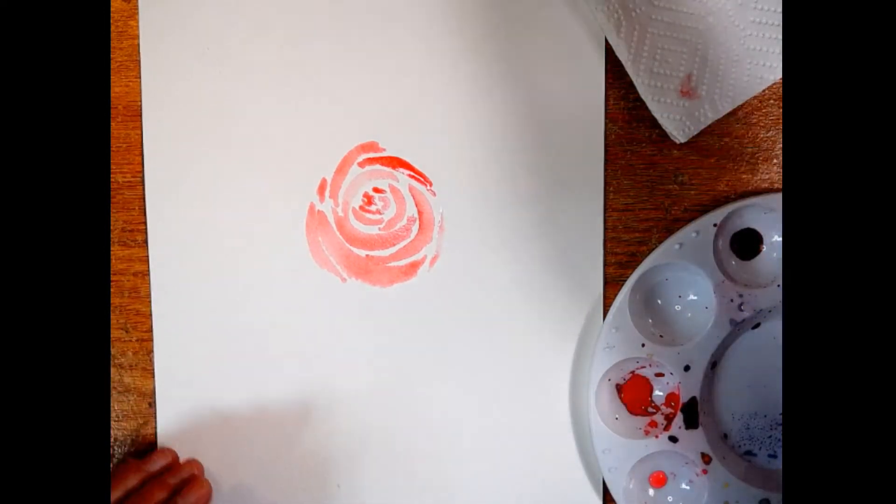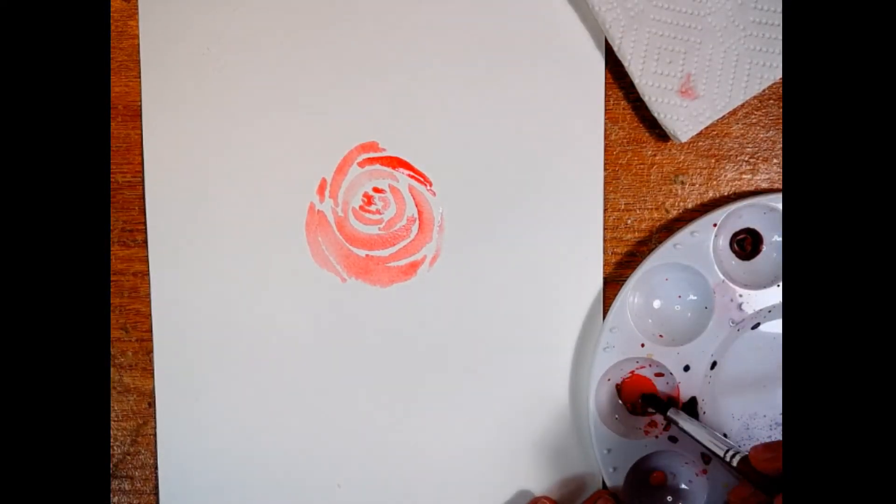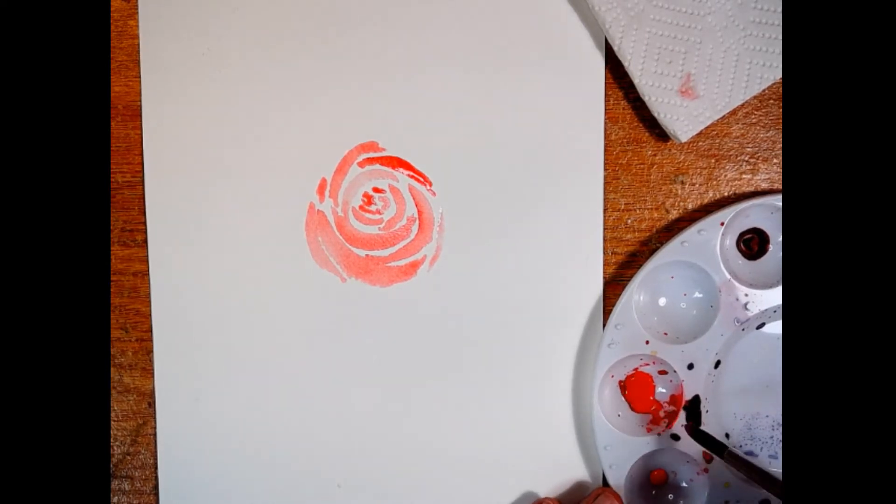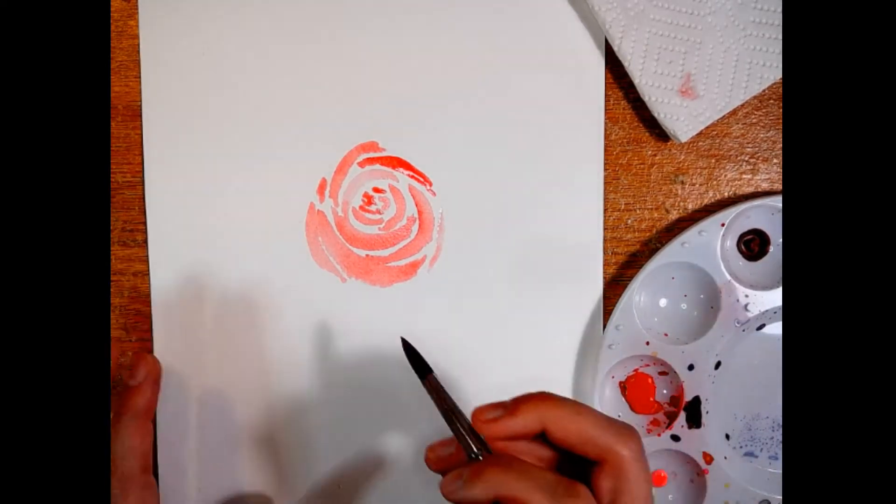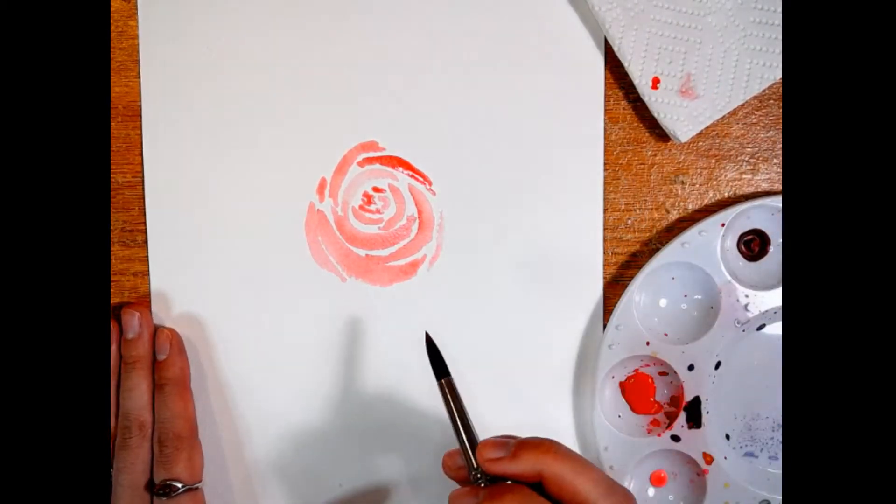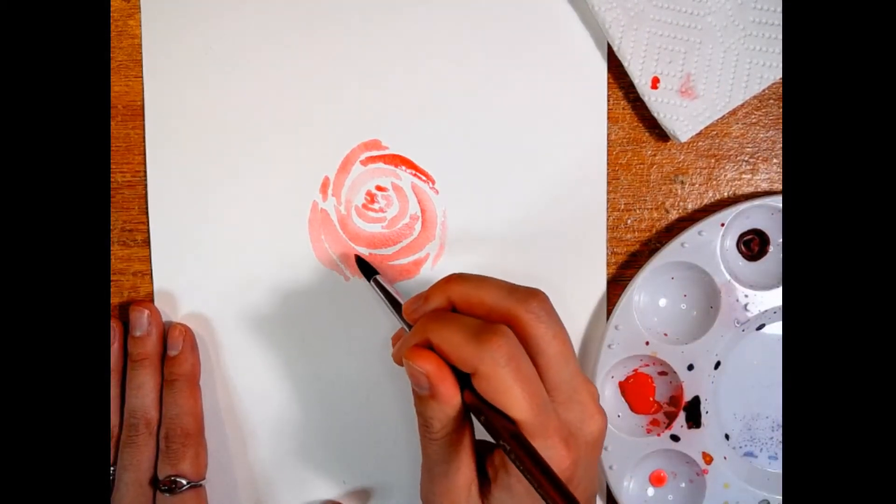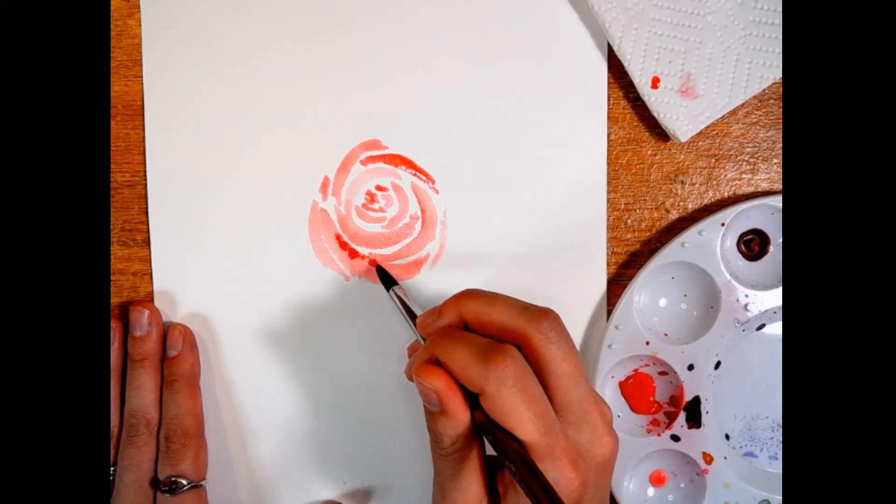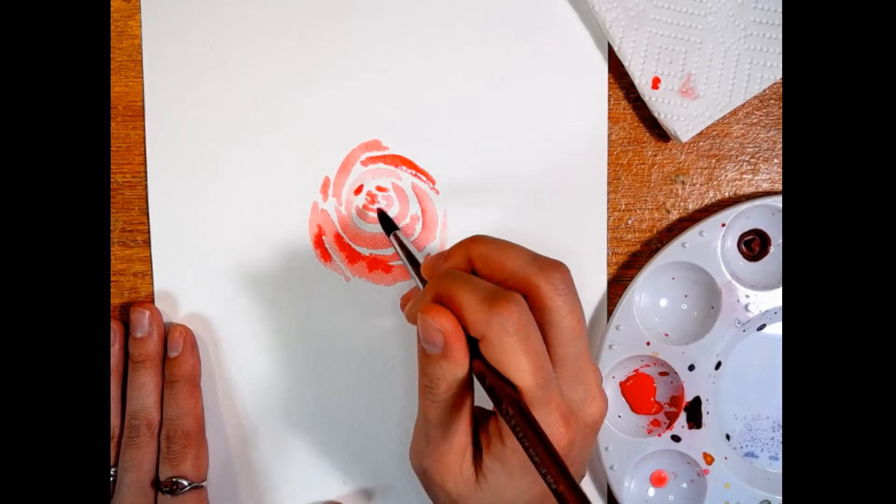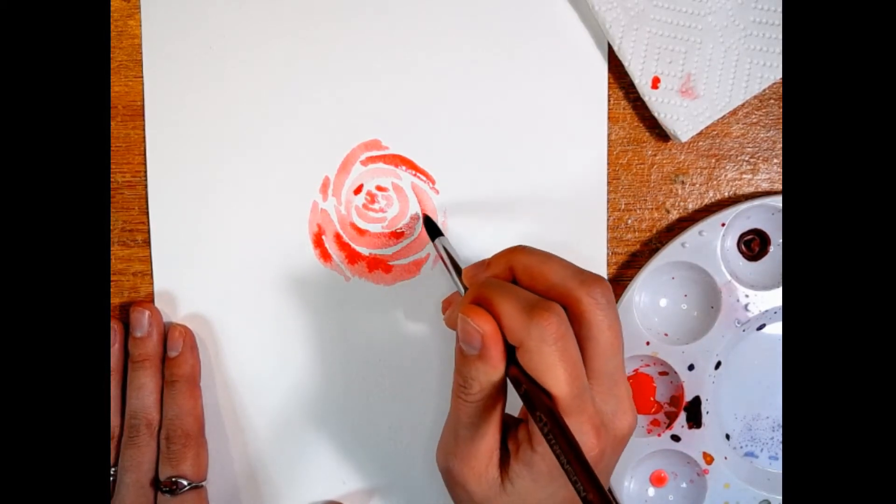So I'm happy with the shape of my rose. Now if I want to add some more character, I can go back to my red and get a heavier value of color in there. So if I touch my paper over here, it's a really bright red. So I'm just going to poke in slightly more color into some of these wet petals.